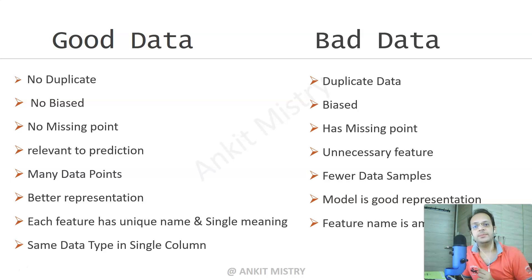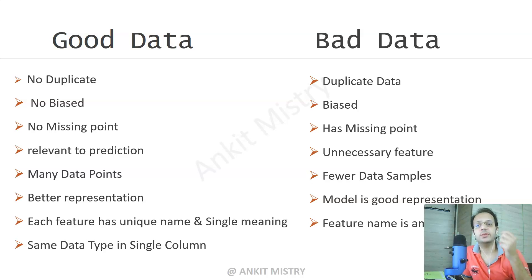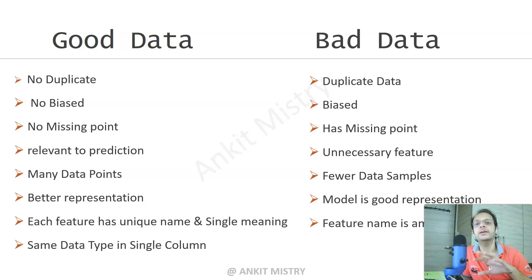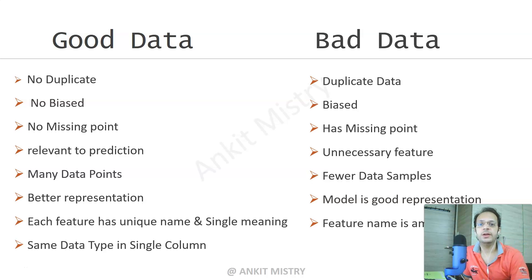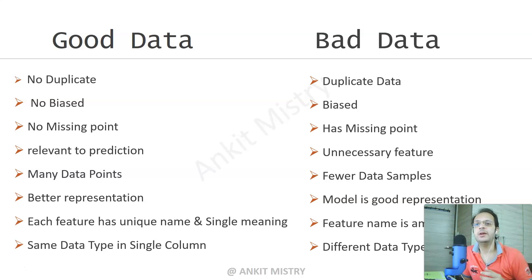Another characteristic is having the same data type in a single column. If you are dealing with data where most values are integers but some entries in the same column are date type or string type, that mixed multi-type situation should not exist in a single column — it becomes very ambiguous to treat that data. In bad data, different data types are present within the same column.